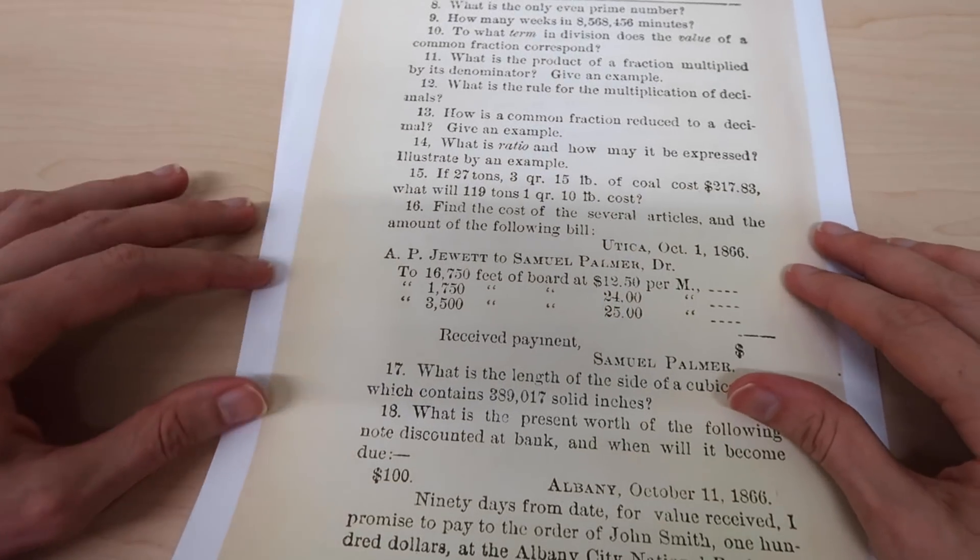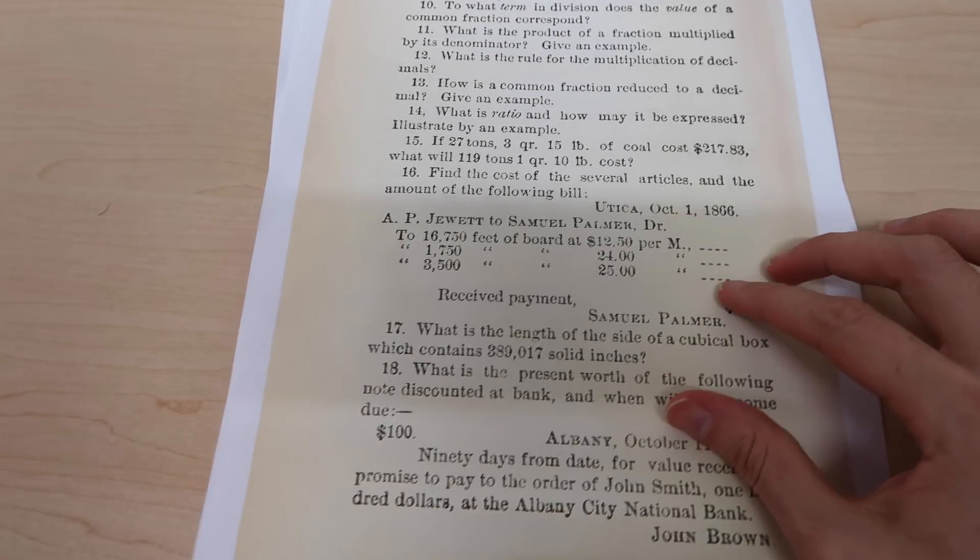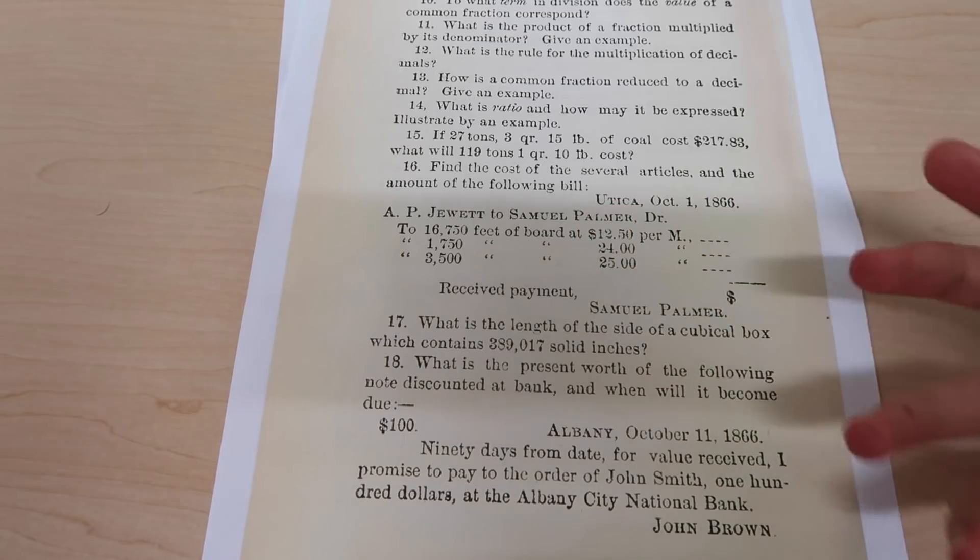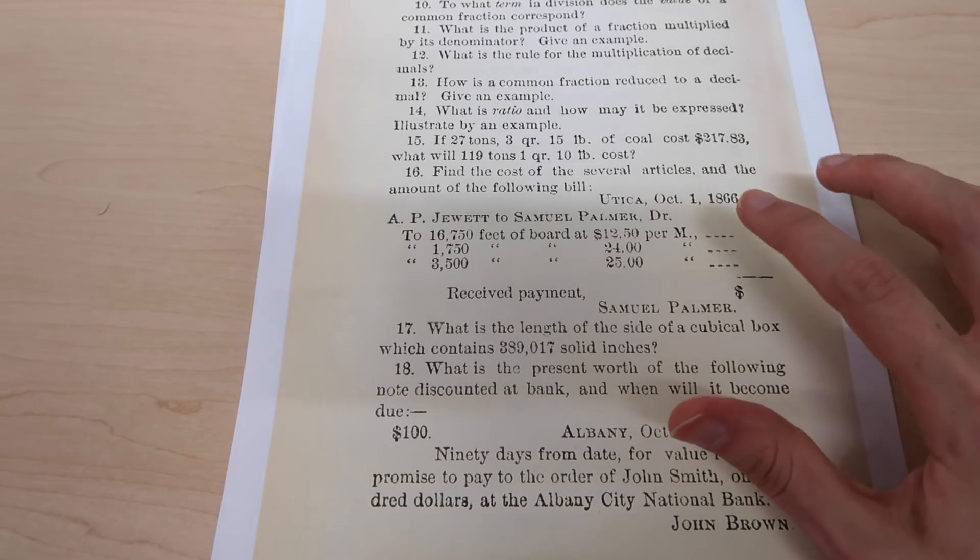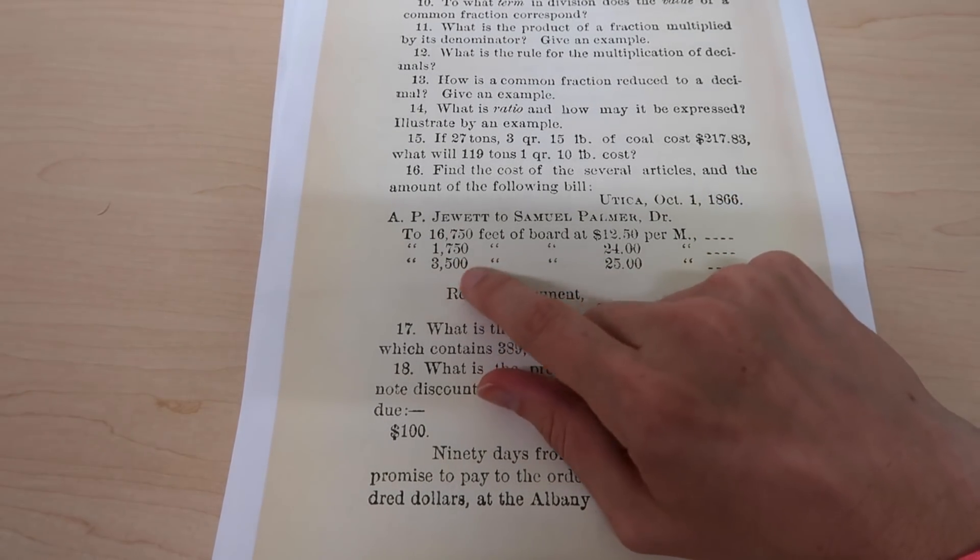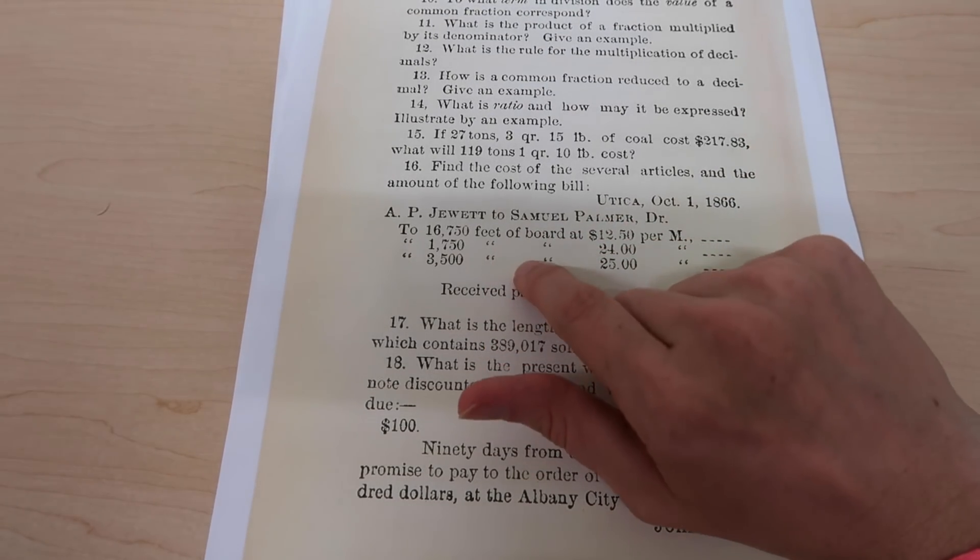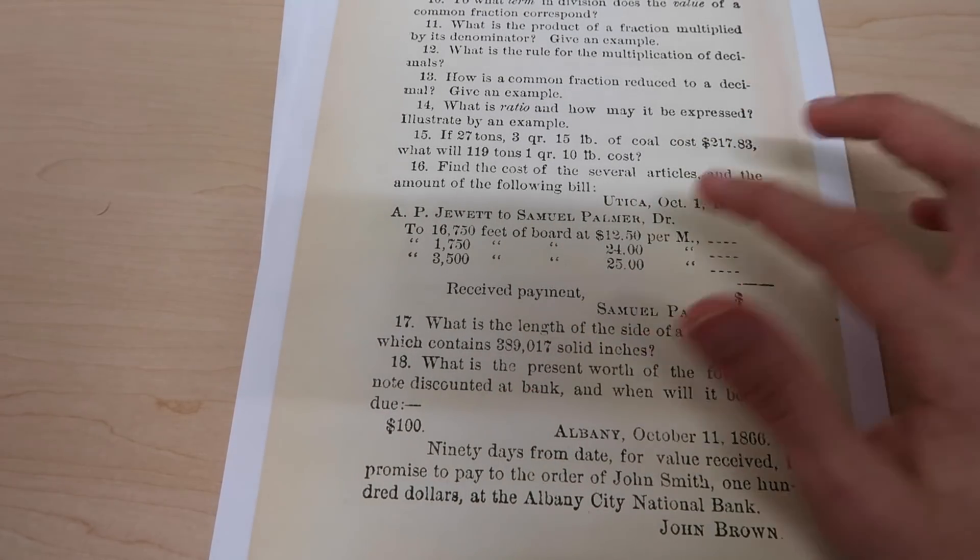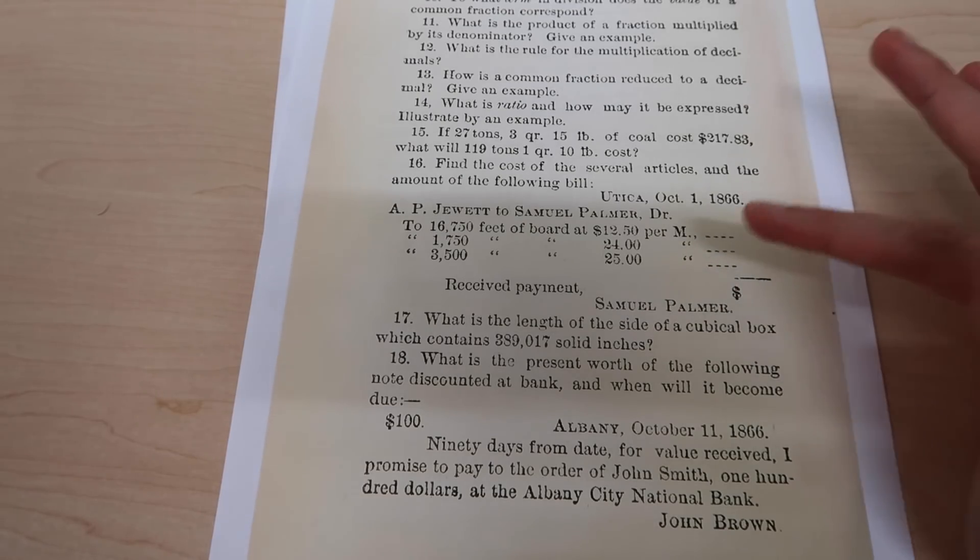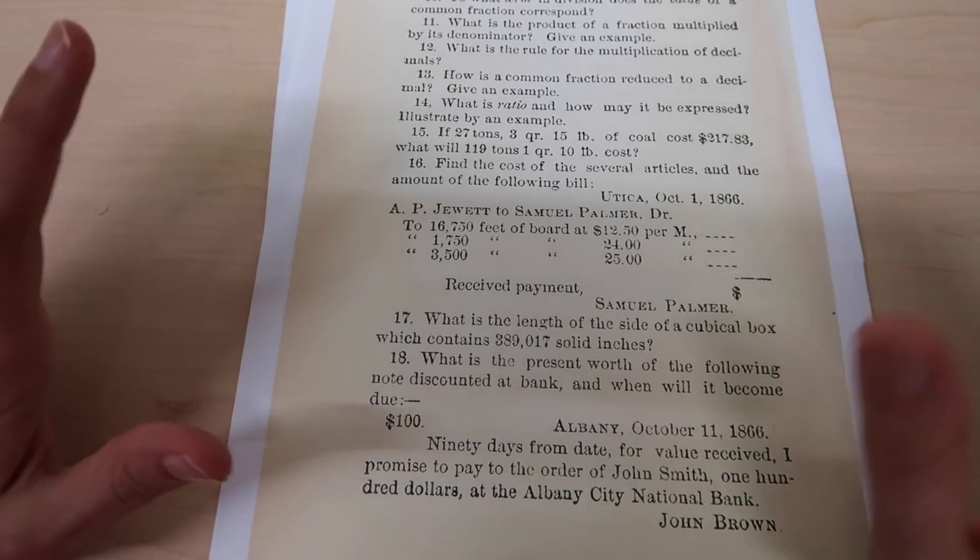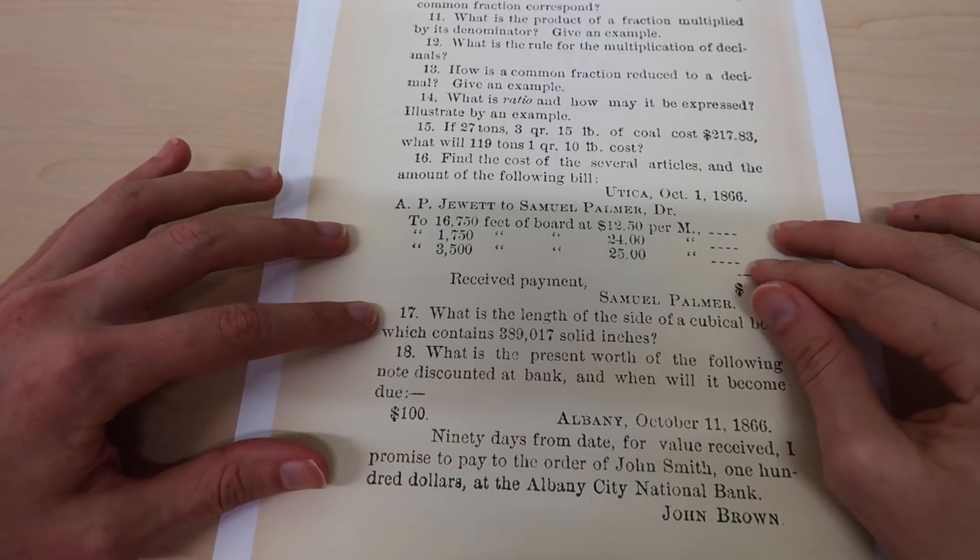Number 16: find the cost of the several articles and the amount of the following bill. This one is a little bit awkward. I think it's got something to do with rent or something, so we've got A.P. Jewett paying to Dr. Samuel Palmer for some amount feet of board at some amount per M. So I guess this is literally square feet of space that you're boarding, and this is either the cost per meter, like square meter per month, I'm not sure. I guess in essence you'd have to understand the language here and what's common in terms of these types of things, but it probably comes down to just adding up these different articles.